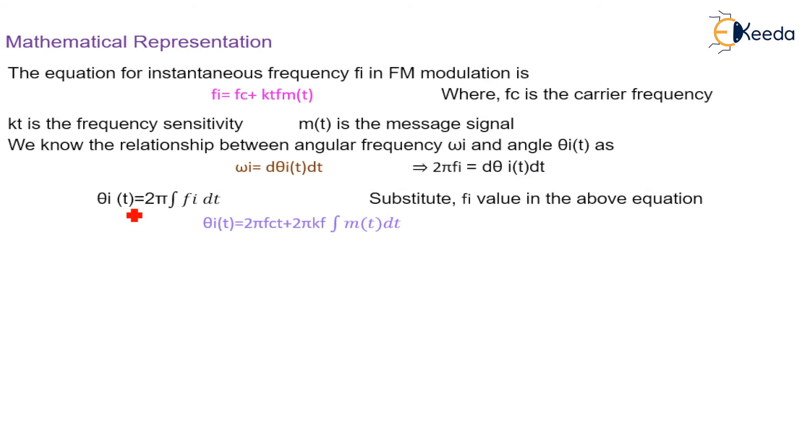Now, θi(t) we can represent it in this way: 2π integration of fi dt. So, substituting the fi value in the above equation gives θi(t) equal to 2π fc t plus 2π kf integration of m(t) dt.